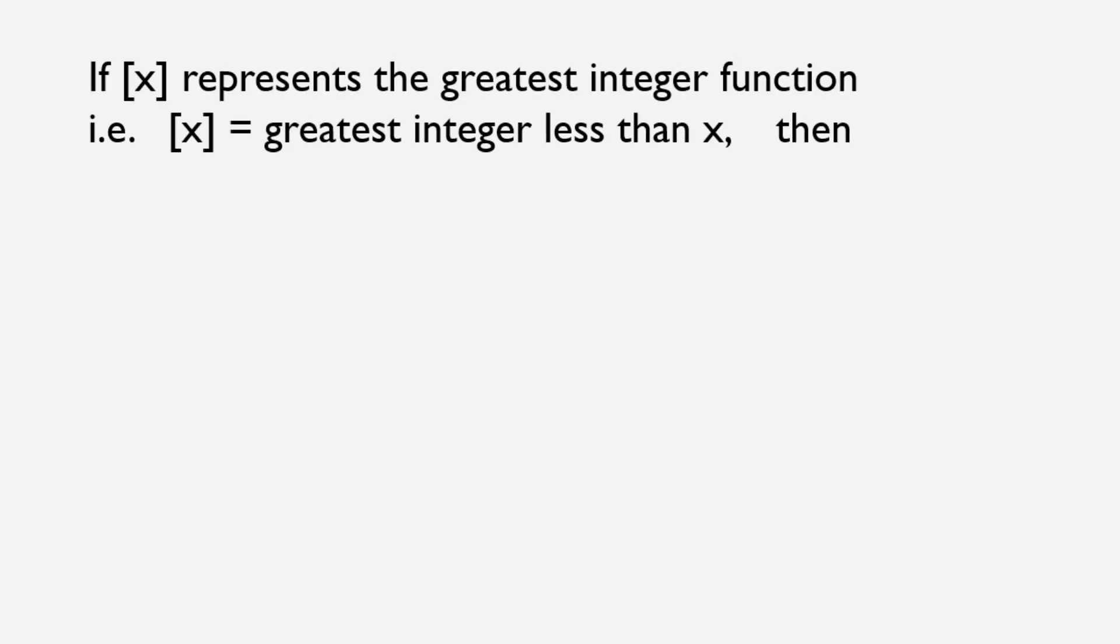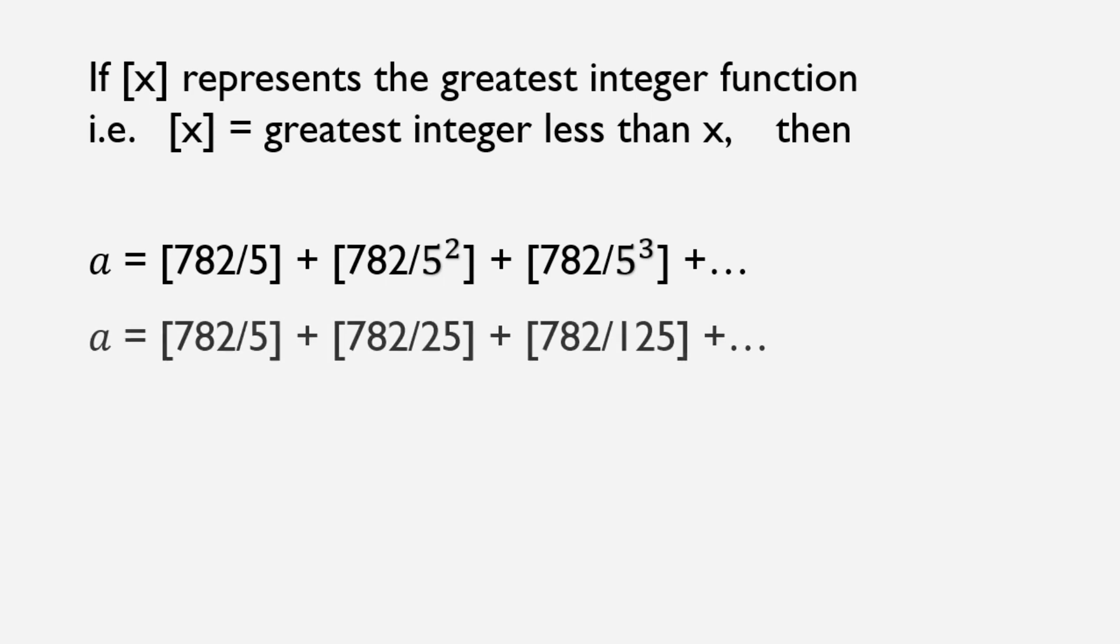We can find the value of a as shown here. If bracket x represents the greatest integer function, then a is equal to bracket 782 by 5, plus bracket 782 by 5 square, plus bracket 782 by 5 cube. Here we have written 782 by 5 because in our very first series, these are the number of terms.